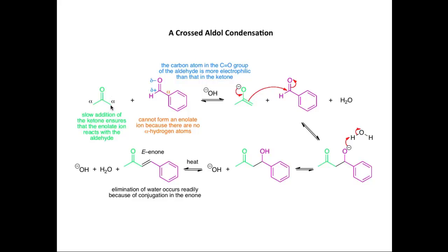As soon as propanone forms an enolate ion, it can act as a nucleophile and attack the carbonyl group of the aldehyde. Also, the carbon atom in the C=O group of the aldehyde is more electrophilic than that in the ketone, so the enolate ion derived from propanone is more likely to attack the carbonyl group of the aldehyde rather than the carbonyl group of a molecule of propanone that has not been deprotonated. Finally, we can ensure a good yield of a single aldol condensation product by adding the ketone slowly to a mixture of benzaldehyde and hydroxide ion. This ensures that as soon as the enolate ion is formed from propanone, it prefers to react with the benzaldehyde because there is a relatively high concentration of benzaldehyde in the reaction mixture and a very low concentration of unreacted propanone.